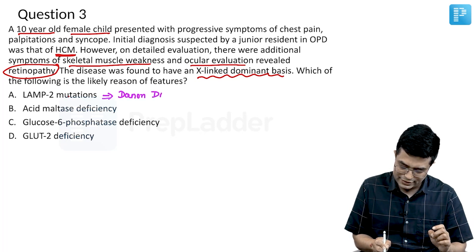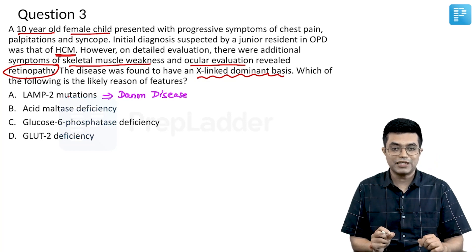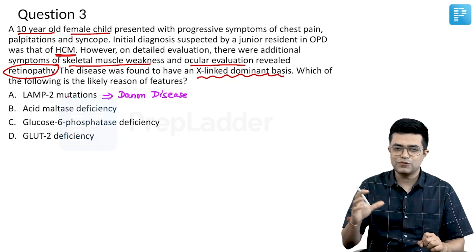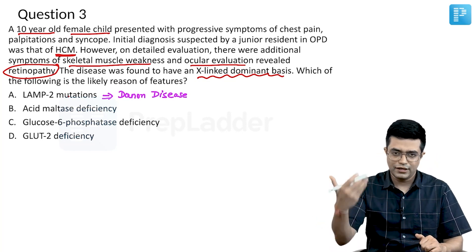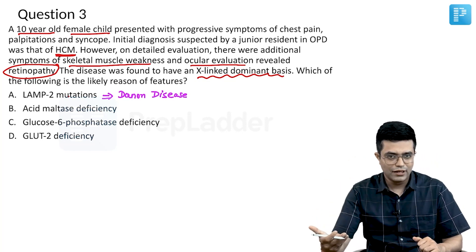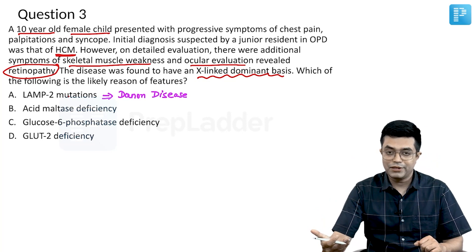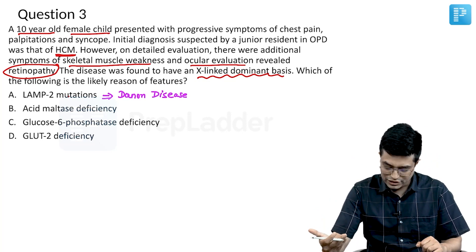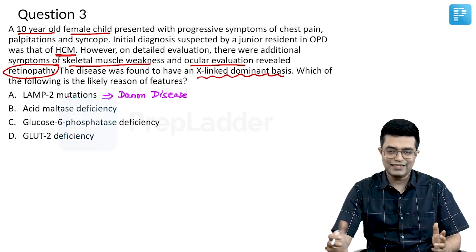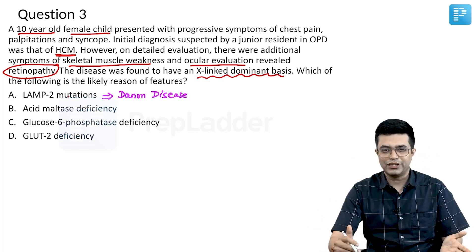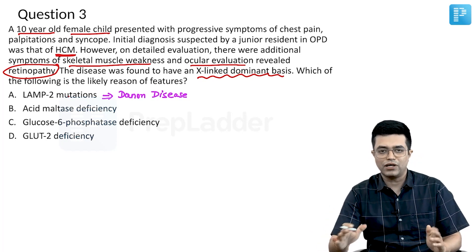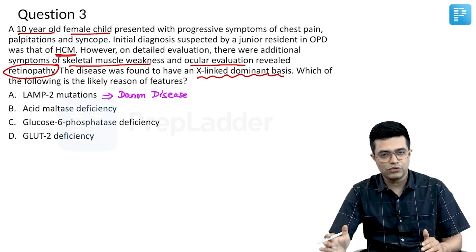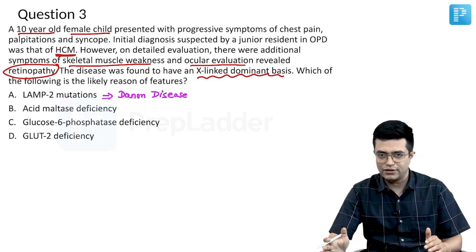Danon disease is very closely related to Pompe disease, but it is not given a specific numerical nomenclature like the other glycogen storage diseases. Danon disease does not come into that classification, but it is now included as a rare type of glycogen storage disease.